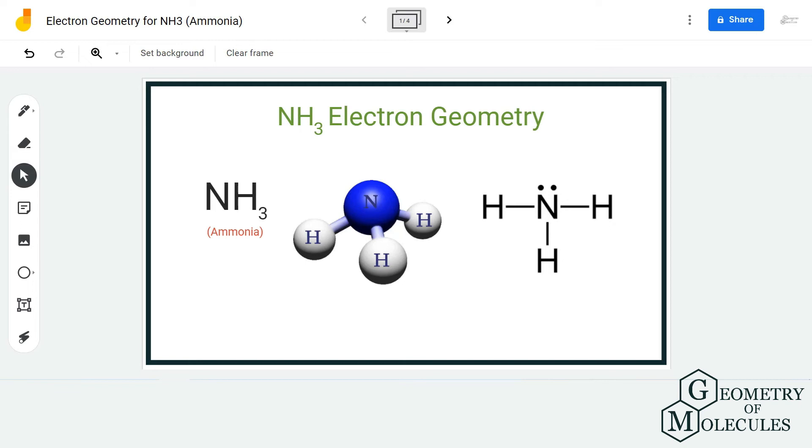Hi guys, welcome back to our channel. In today's video, we are going to help you determine the electron geometry for ammonia. Ammonia has the chemical formula NH3, and to find out this electron geometry, we are first going to look at its Lewis structure followed by its shape.